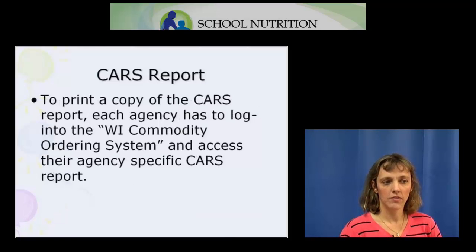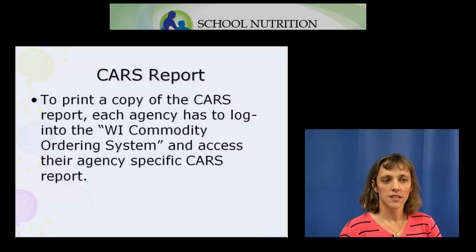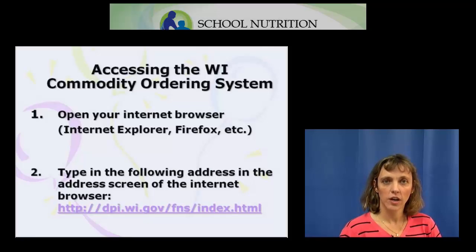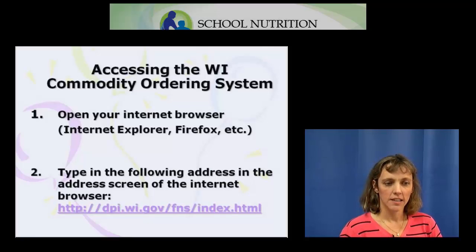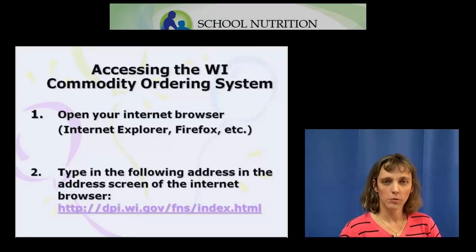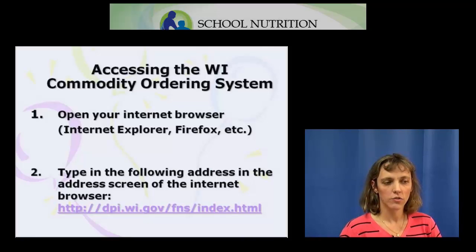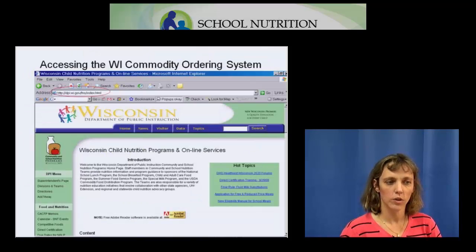To print a copy of the CARS report, you have to access the Wisconsin Commodity Ordering System. To do so, open your Internet browser, such as Internet Explorer or Firefox, and type in the following address: http://dpi.wi.gov/fns/index.html. This screen shows a copy of what it looks like when you type in that address.